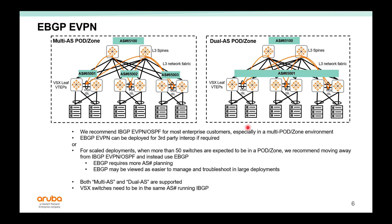If you need to plan for multiple zones or multiple pods and use lots of AS numbers within a pod, you need to burn and plan for a lot of AS numbers. Some third-party vendors only support EBGP, so you're forced to use EBGP EVPN. As a general rule of thumb, if you have more than 50 switches in a zone or pod, we recommend moving away from IBGP EVPN and OSPF and moving to EBGP. It requires AS number planning — the minimum for Dual AS is basically two AS numbers per zone — but it can also be easier to manage and troubleshoot in larger environments, since you no longer need OSPF and can focus on BGP troubleshooting. Both Multi-AS and Dual-AS are supported in 10.4.